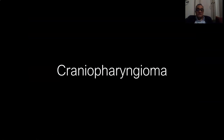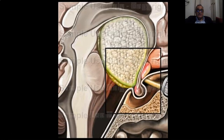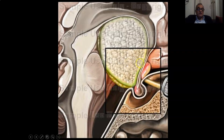In cases of craniopharyngiomas, which are tumors that arise along the craniopharyngeal duct, the tumor arises from the sella and grows upwards. As the tumor grows, it elevates the floor of the third ventricle and comes behind the anterior wall. So if you approach this tumor through the lamina terminalis anteriorly, you get two layers of ependyma: one of the anterior wall of the third ventricle, and the other of the floor of the third ventricle.